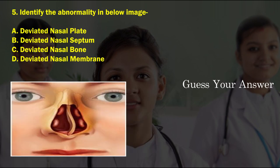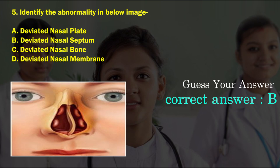Identify the abnormality in the below image. Option A: deviated nasal plate, option B: deviated nasal septum, option C: deviated nasal bone, option D: deviated nasal membrane. The correct answer is option B, deviated nasal septum.